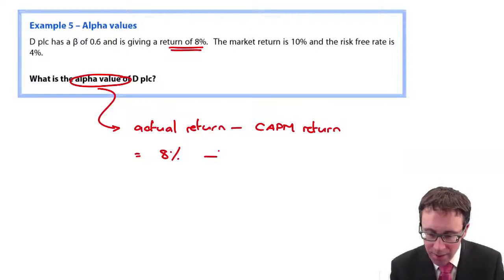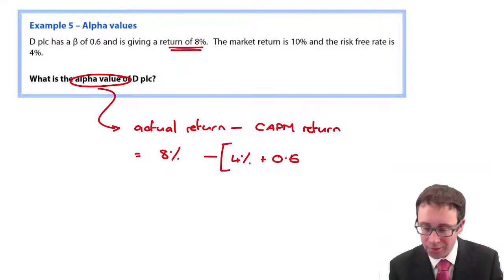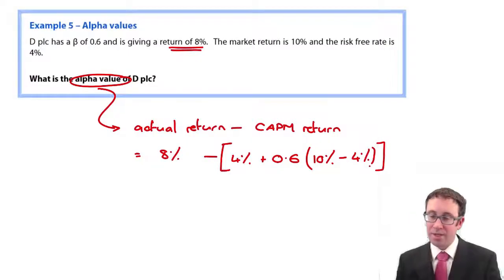So to work out the CAPM return, we take the risk free rate, that's 4 percent. We add on 0.6. So a defensive investment's beta is less than 1. And the risk premium is 10 percent less than 4.